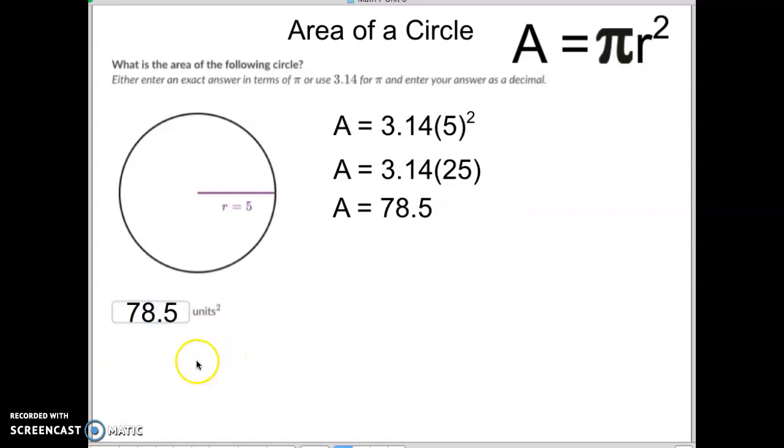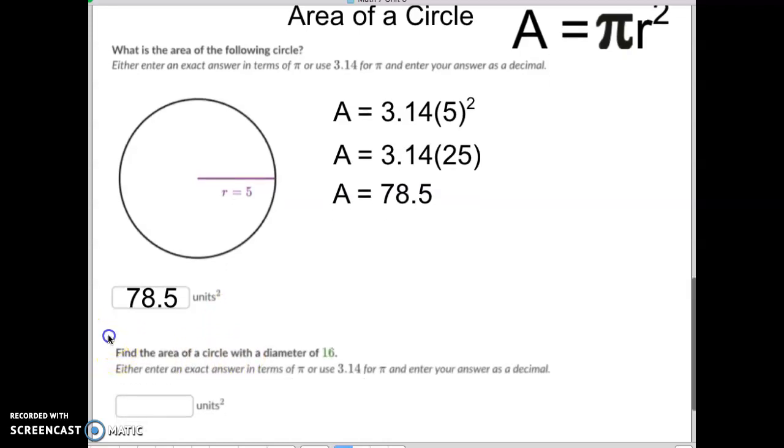But what if they don't give us the radius? For example, we have this next problem down here. They're telling us that the diameter is 16 of a circle. Well, we know that if the diameter is 16, then the radius would equal 8. You just take half of the diameter.